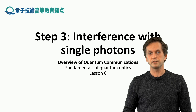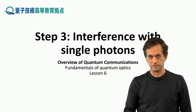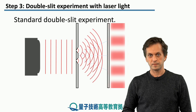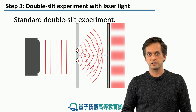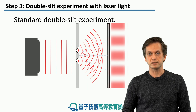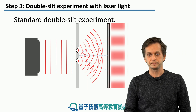Step 3: Interference with single photons. I'm sure you have already seen this scenario of a double slit experiment with laser light, but let's review it again.